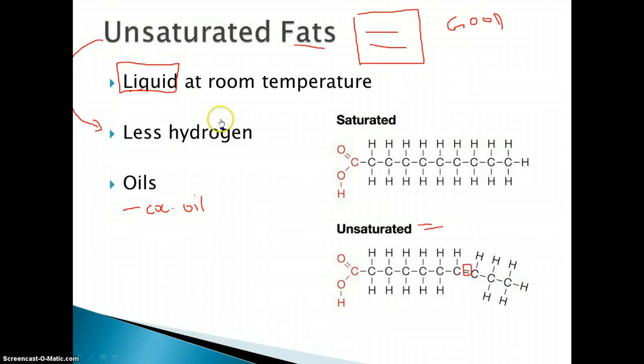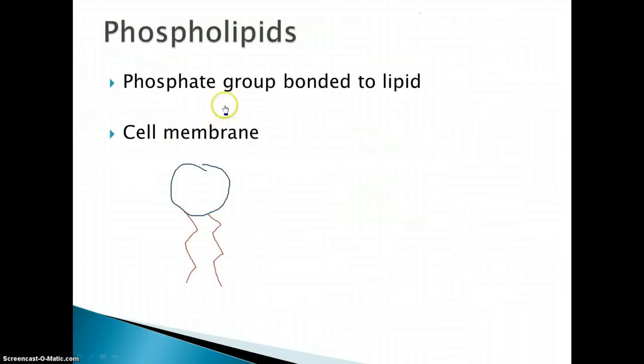The next thing we're discussing is phospholipids. And these are a unique type of fat on their own. They're made out of a phosphate, which is a PO4, and a lipid.